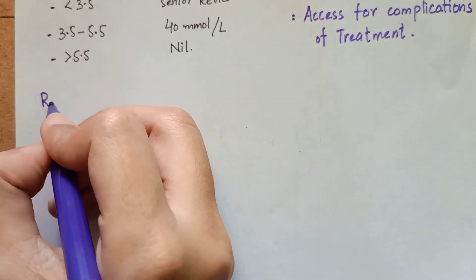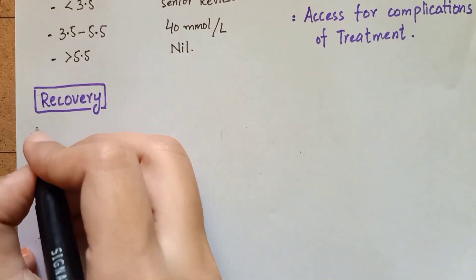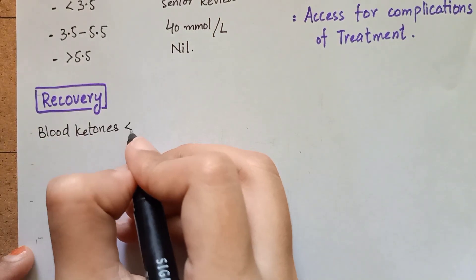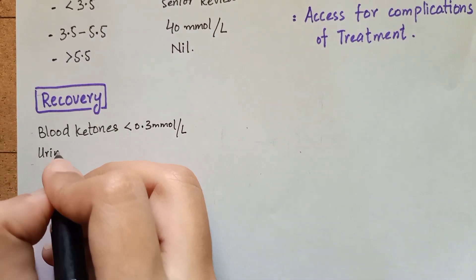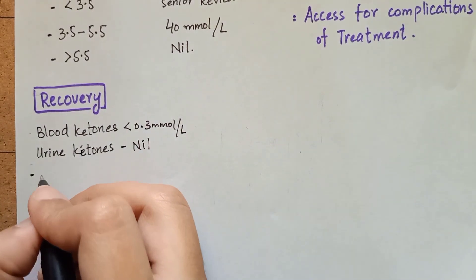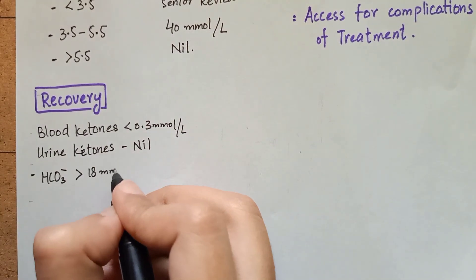When ketonemia and acidosis have resolved, which means blood ketones less than 0.3 millimole per liter and bicarbonates more than 18 millimole per liter, then you will initiate subcutaneous insulin with advice from diabetes team.